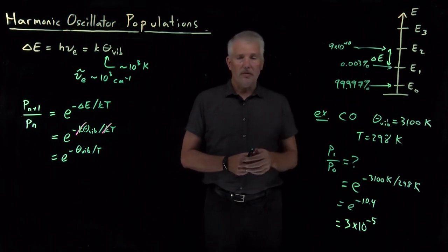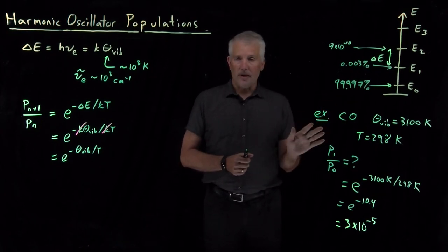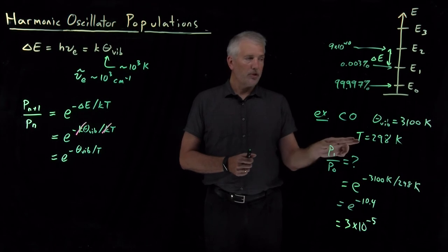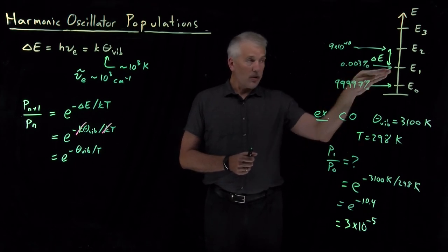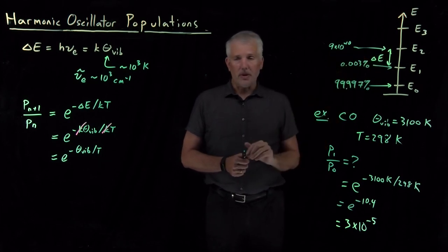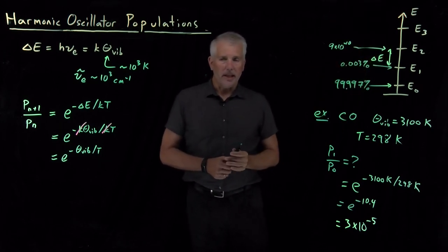So most of the carbon monoxide molecules are not vibrationally excited at room temperature. The few that are, are only excited into the first vibrational state. Almost none of them are in the second vibrational state, and the populations get smaller as we climb that ladder.